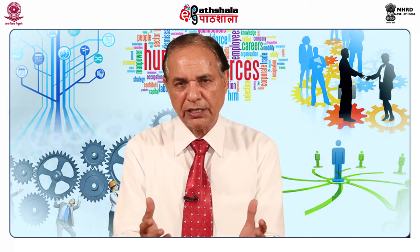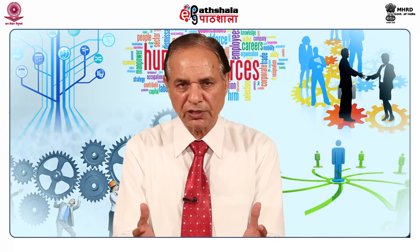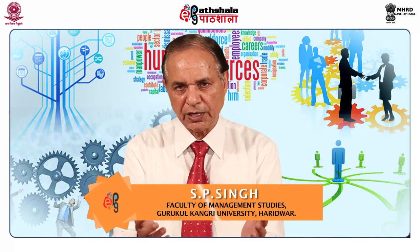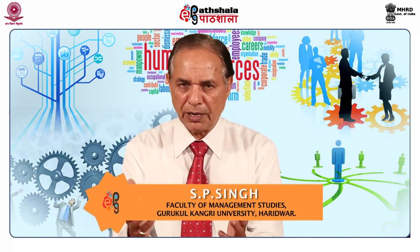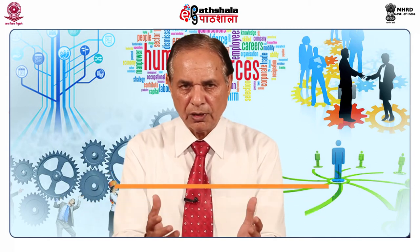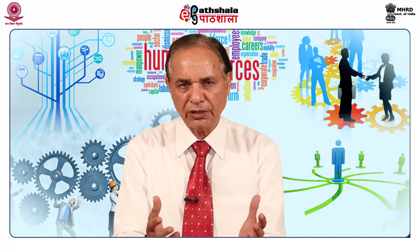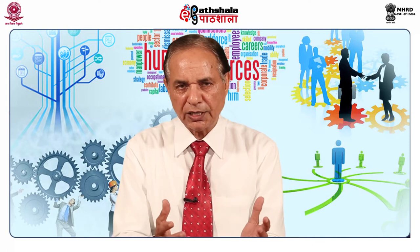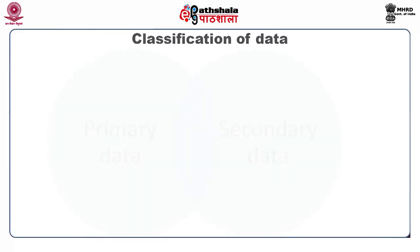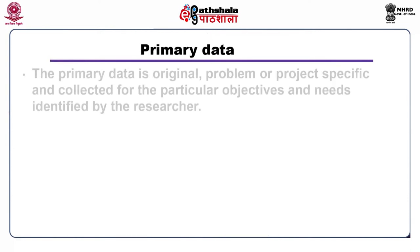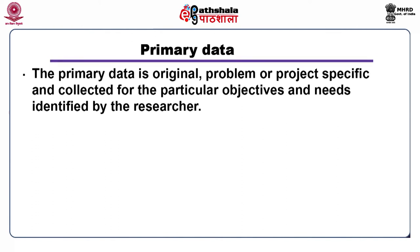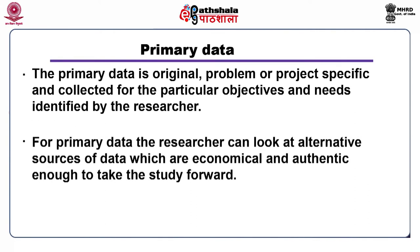A variety of methods and techniques are available for collecting the specific information required for a study. The sources of data could either be primary or secondary in nature. Primary data is original, problem or project specific, and collected for the particular objectives and needs identified by the researcher. The researcher can look at alternative sources of data which are economical and authentic enough to take the study forward.